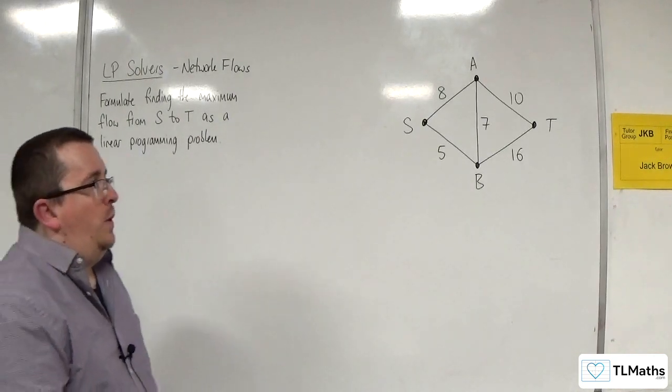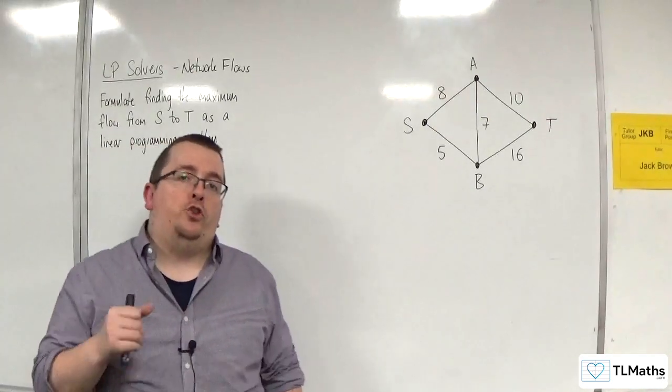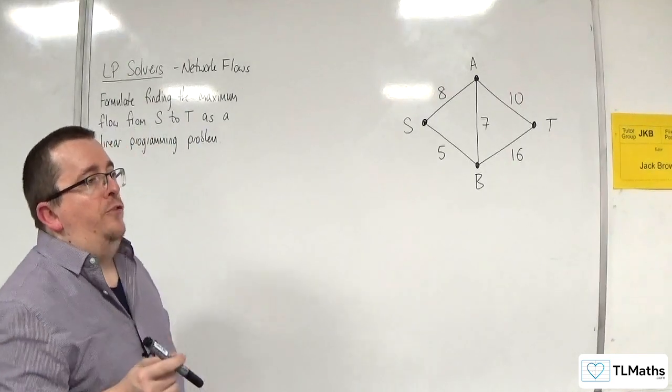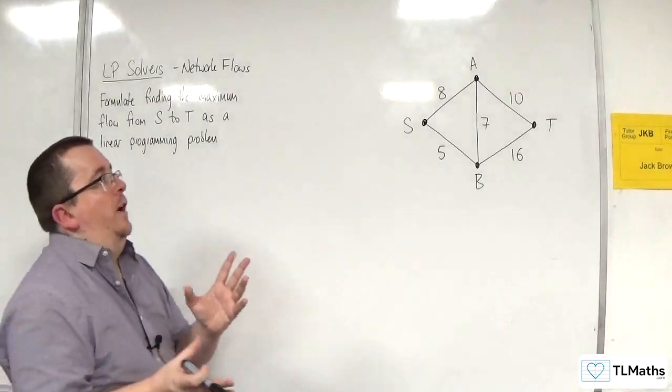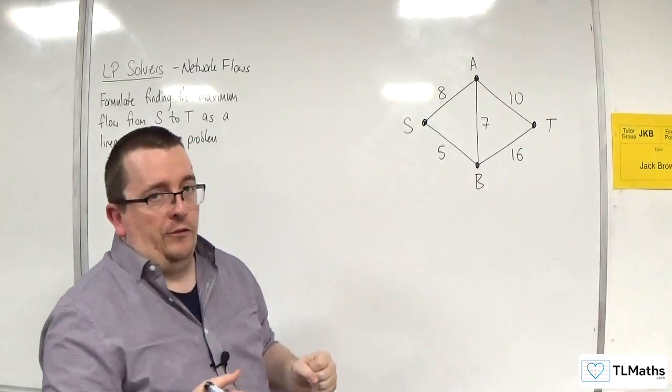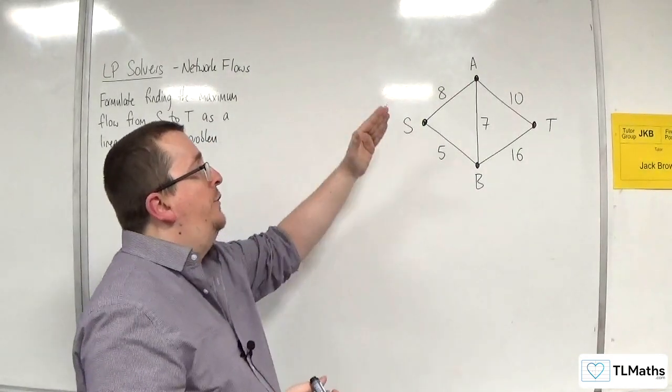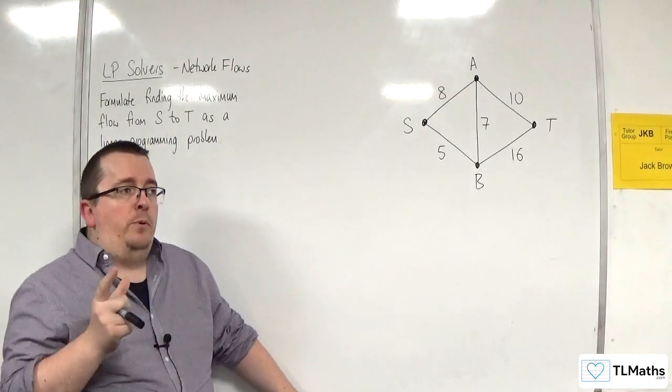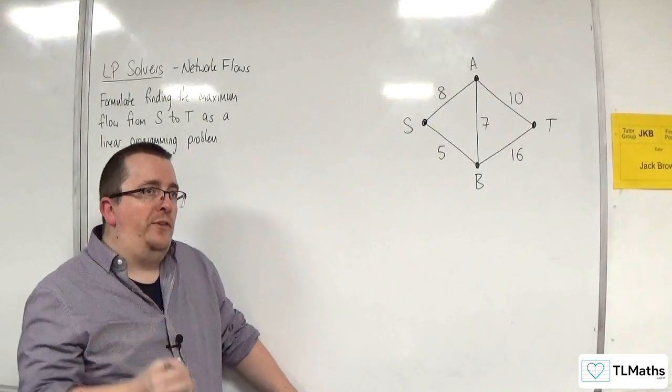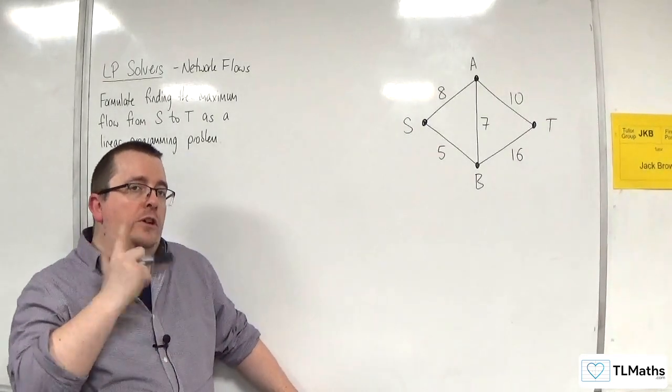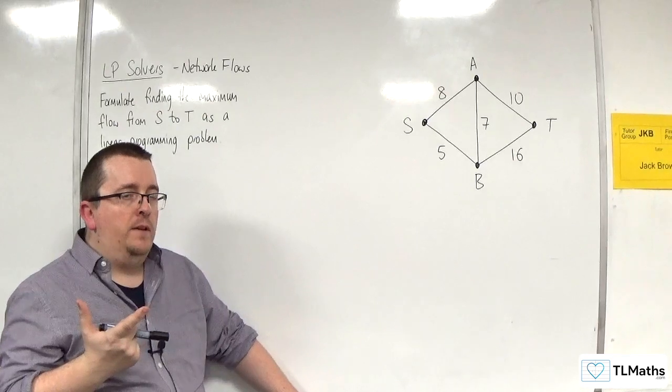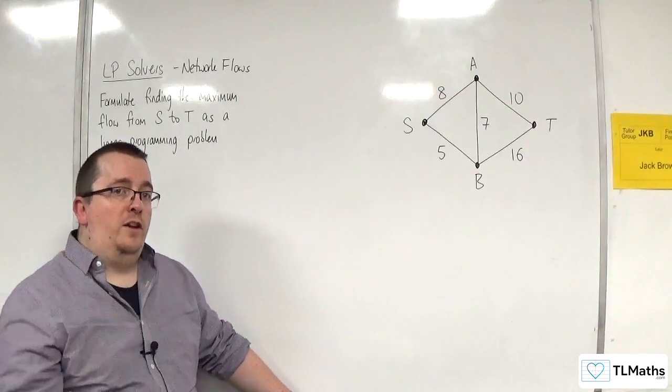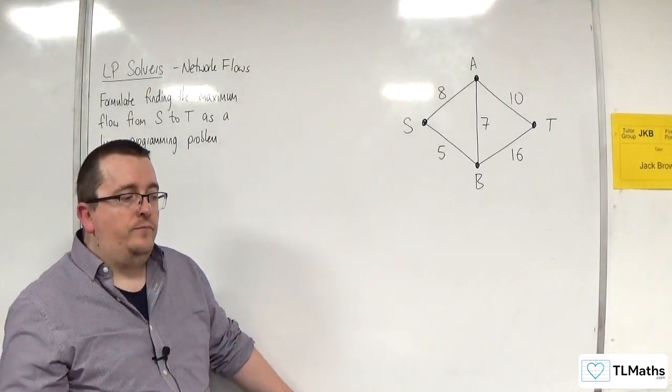Now, this situation is different to finding the shortest path and longest path, because no longer do I just have to have a flow going from S to A or from S to B. I could have some going along S to A and some along S to B. So the variables no longer represent indicator variables. They're no longer zeros and ones. Actually, what they will represent is the flow going along that edge or that arc.